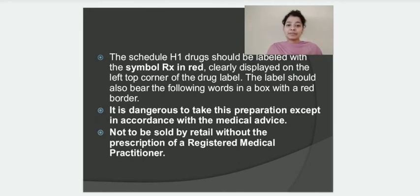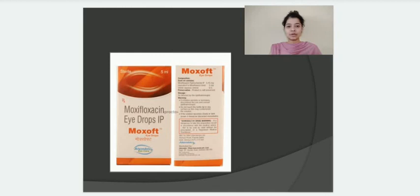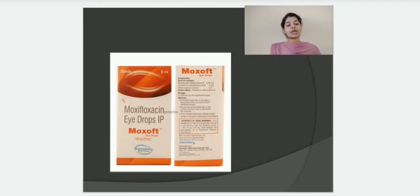Schedule H1 drugs should be labelled with the symbol Rx written in red color. The label should bear the following words in a box with a red border: that this particular drug product is dangerous to take except in accordance with medical advice, and that it is not to be sold by retail without the prescription of a registered medical practitioner. On the example label, Rx is mentioned in red color and the red color box states the drug belongs to H1 category with both warnings clearly mentioned.